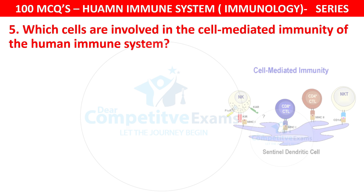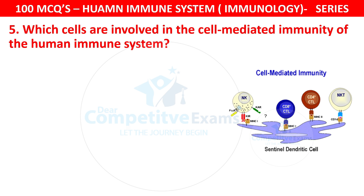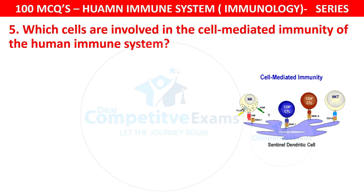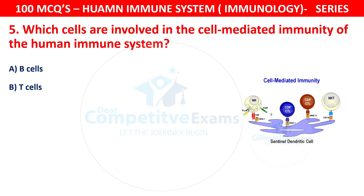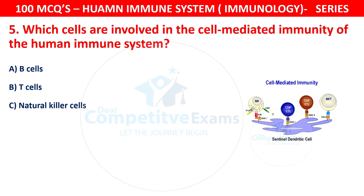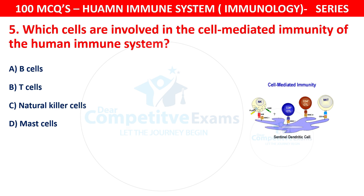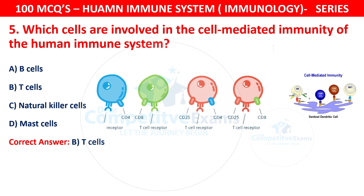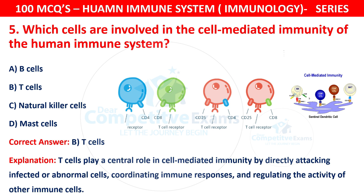Question 5. Which cells are involved in cell-mediated immunity of the human immune system? The options are B cells, T cells, natural killer cells, or mast cells. The correct answer is B — T cells. T cells play a central role in cell-mediated immunity by directly attacking infected or abnormal cells, coordinating immune responses, and regulating the activity of other immune cells.